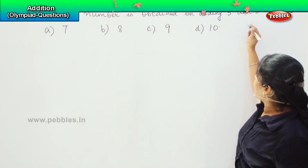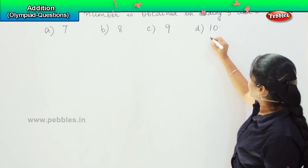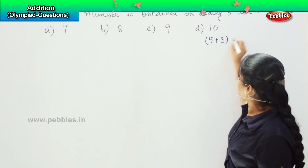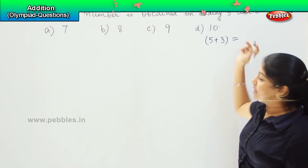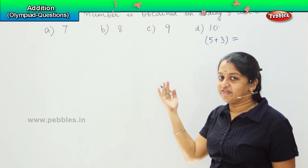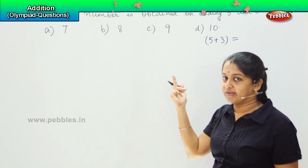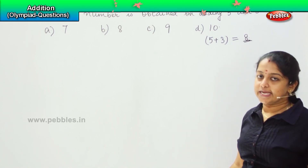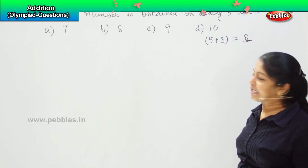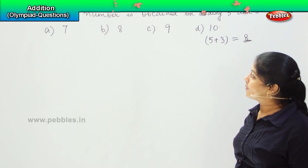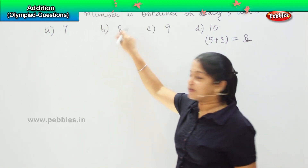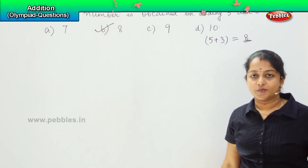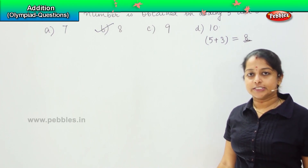So, how do we solve it? We have to add 5 plus 3. So, 5 in the mind, 3 on the fingers — after 5: 6, 7 and 8. So what should be my answer? The answer is 8. Where can you find 8? See the options — yes, it is option B. So, my answer is option B, which is 8.